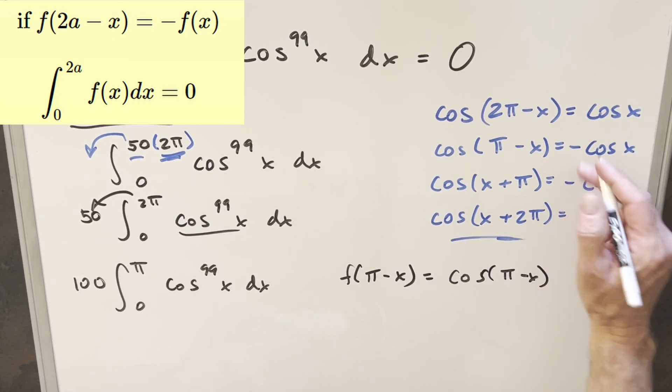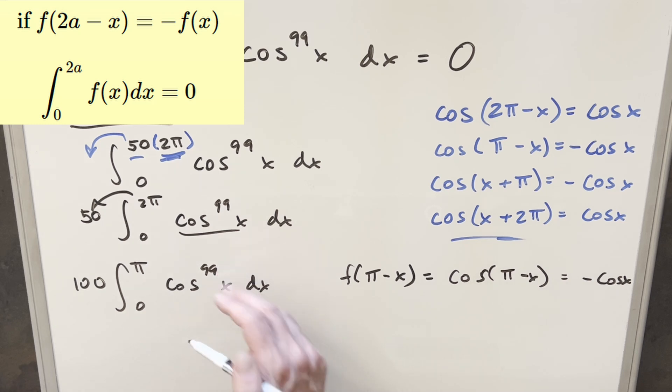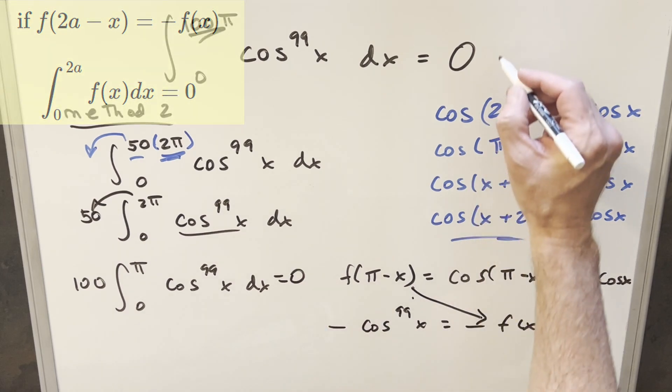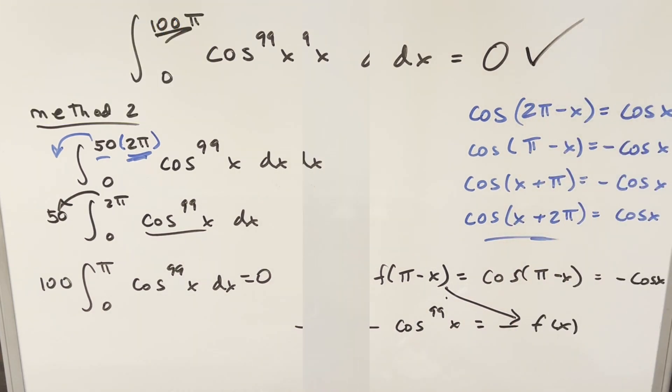And then that's going to be this formula right here, which is minus cosine x. When you raise this to the 99th power, because 99 is odd, you're going to have minus cosine 99x, and that's going to be minus f of x. And this formula for King's principle tells us that this is equal to minus f of x, the whole integral is 0. Same answer we got in the first method.